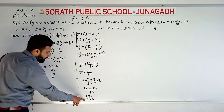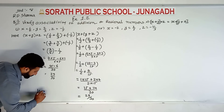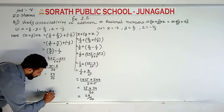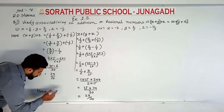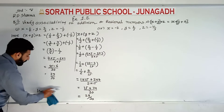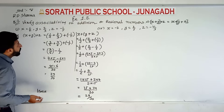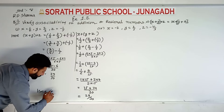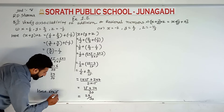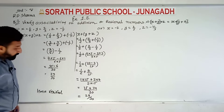So both sides are the same. Hence verified. This is how we verify associativity for the whole exercise.